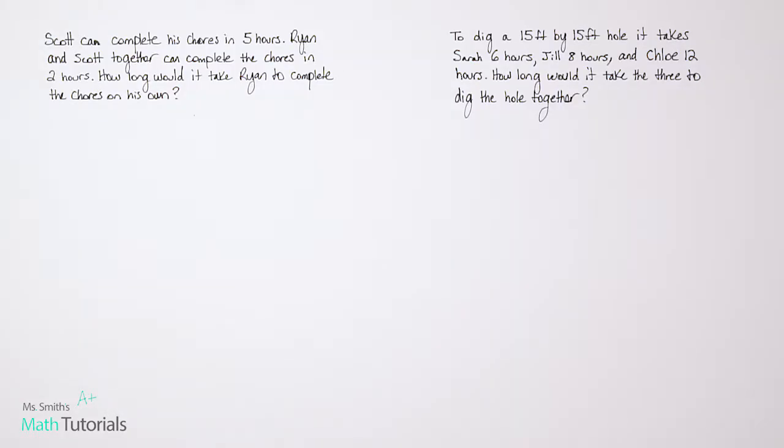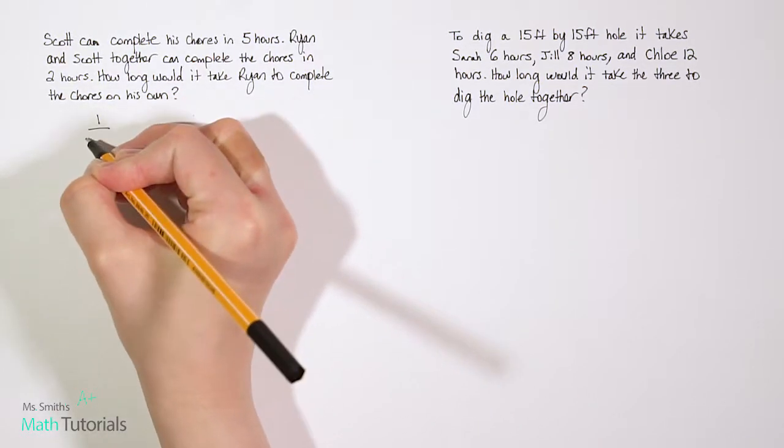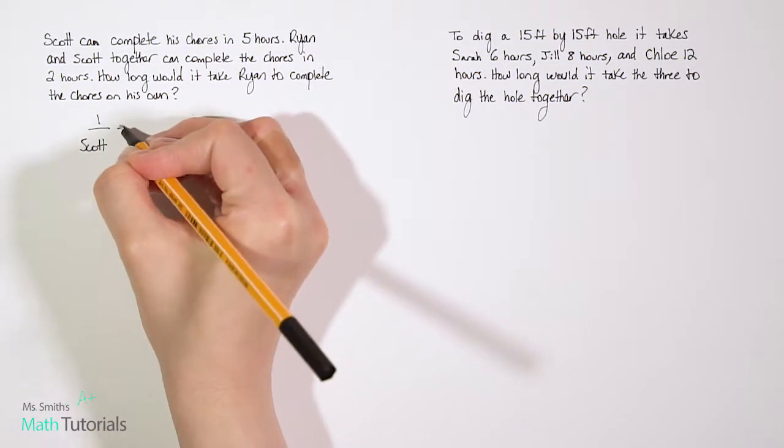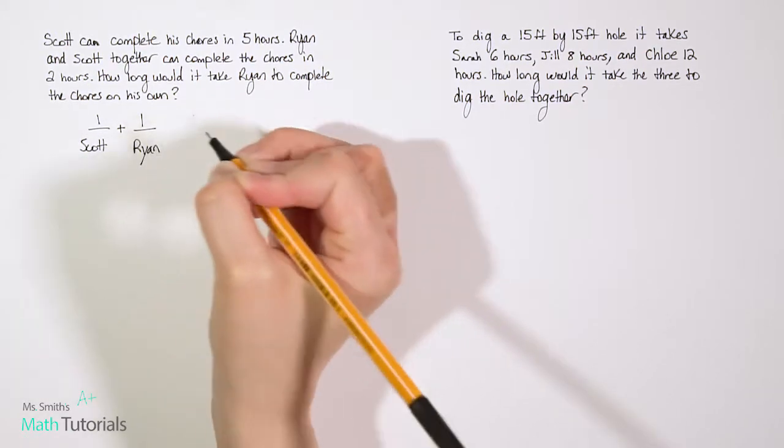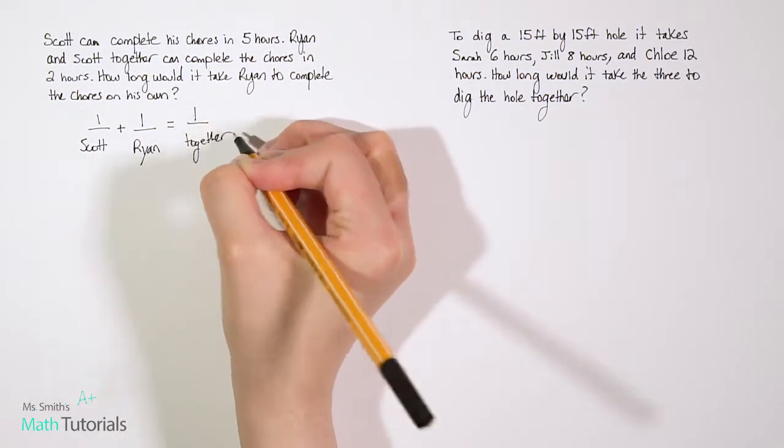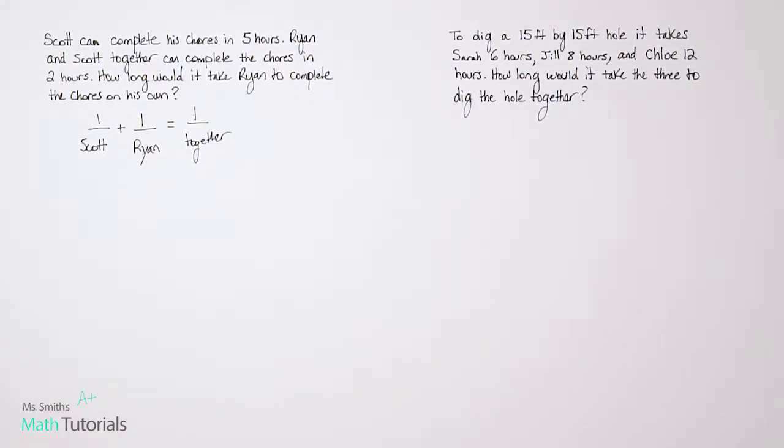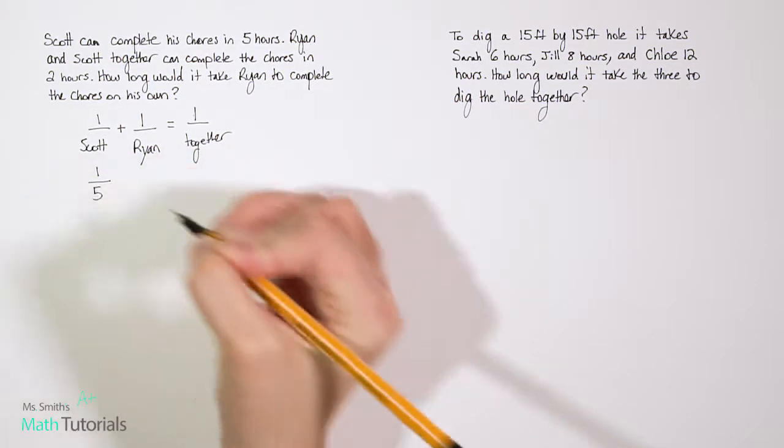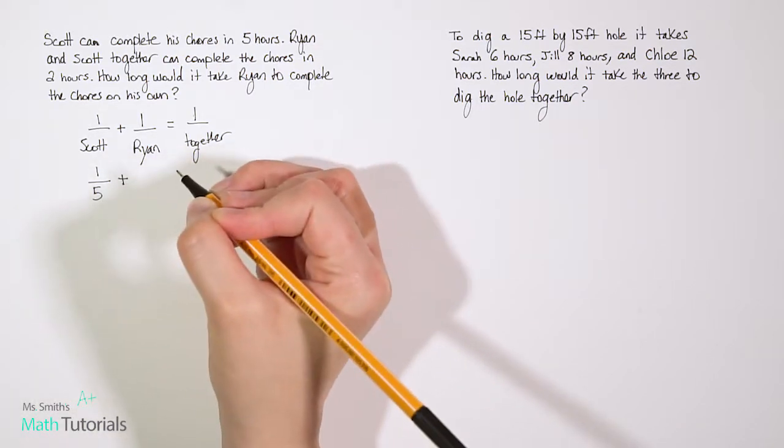Let's look at two more examples. So the first one says Scott can complete his chores in five hours. Ryan and Scott together can complete the chores in two hours. How long would it take Ryan to complete the chores on his own? This one's asking a little bit of a different question. It's still the same idea behind it of we've got two people working, and then we have some information about them working together. But this time our setup is a little different, but let's start with the same. So we know we have one over our first person, Scott, plus one over our second person, Ryan. And we know that if they work together, that would be what it would equal. So one over together. Let's now replace Scott with how many hours it would take him to do his chores. So we know it takes Scott five hours.